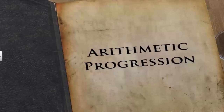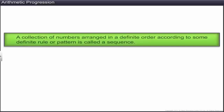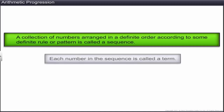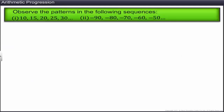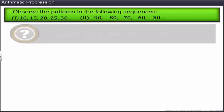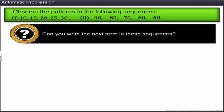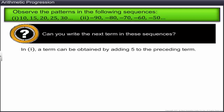In this module, you will learn about arithmetic progression. A collection of numbers arranged in a definite order according to some definite rule is called a sequence, and each number is called a term. In the first sequence shown, a term is obtained by adding 5 to the term preceding it — the nth term equals the (n−1)th term plus 5, which is the constant difference between consecutive terms. In the second sequence, each term is obtained by adding 10 to the preceding term.